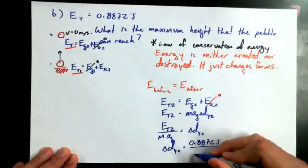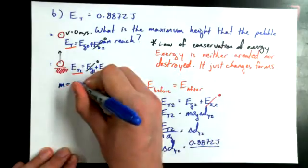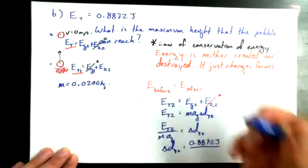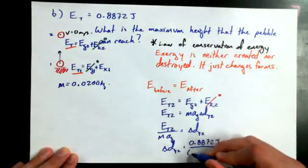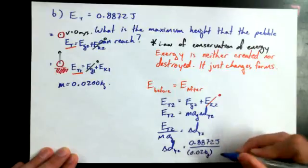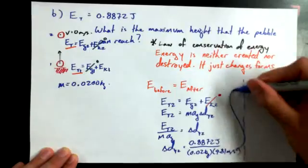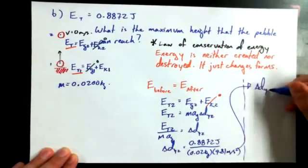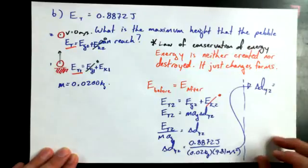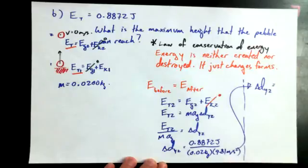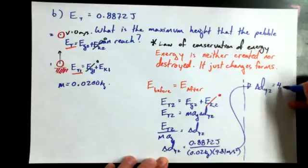Delta DY at time 2 is going to be, and we're going to plug in some values here. So total energy, we said, unrounded was 0.8872 joules, divided by, we said that this thing had a mass of 0.02 kilograms. I'm going to drop the trailing zeroes just to make it a little bit tidier, but we know that they're there. 0.02 kilograms times 9.81. Somewhere around 4.5, I think. Anybody got it? 4.5, 2, 1, 9. Oh, let's say 4.5, 2, 2, okay?